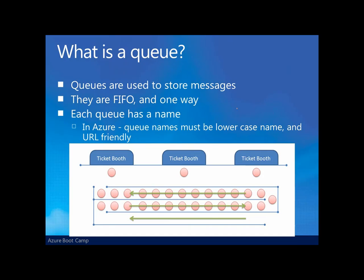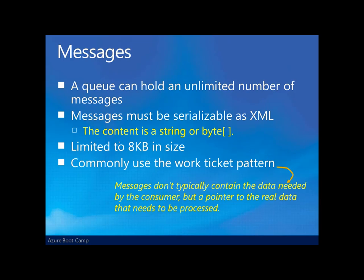So what exactly is a queue? Queues are used as stores for messages. They are first-in, first-out and one-way — an application can put a message on a queue while other applications grab messages off that queue. In Azure, each queue has a name, and queue names must be all lowercase and URL-friendly. A queue can hold an unlimited number of messages theoretically, though each message is limited to 8K in size. Messages have to be serializable — the content is either a simple string or byte array format. Typically we'll use what's known as the work ticket pattern for communication between components.